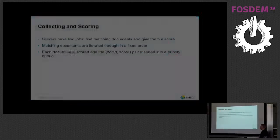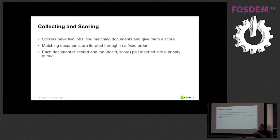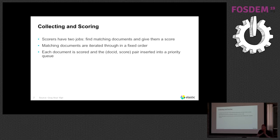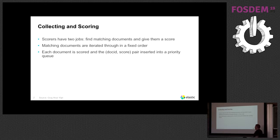We're going to talk about the lowest level of Lucene, how documents are actually collected. We have a class called a Scorer, and Scorer has two jobs. First job is to provide an iterator which will go and find and iterate over all the matching documents for your particular query. And then it will also give each of those documents a score. We're always going in terms of increasing document ID. As we score everything, we have a priority queue which says, I want the top ten matching documents. As we go through each document, we'll generate a score for it. If it's going to be competitive, we insert it into the priority queue. If it's not competitive, we can ignore it.